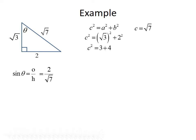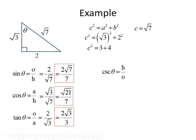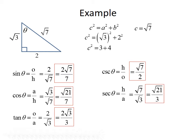Sine of theta is opposite over hypotenuse, which is 2 divided by root 7. Rationalizing gives us 2 root 7 over 7. Cosine of theta equals adjacent over hypotenuse, which is root 3 over root 7. Rationalizing gives us root 21 over 7. Tangent of theta is opposite over adjacent, which is 2 divided by root 3. Rationalizing gives 2 root 3 over 3. Cosecant of theta is hypotenuse over opposite, giving root 7 over 2. Secant of theta is hypotenuse over adjacent, which is root 7 over root 3. Rationalizing gives root 21 over 3. And cotangent of theta is adjacent over opposite, which is root 3 over 2.